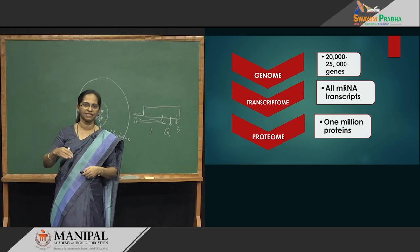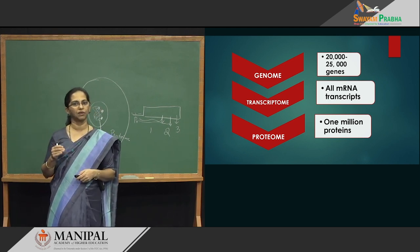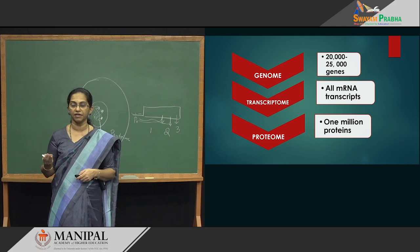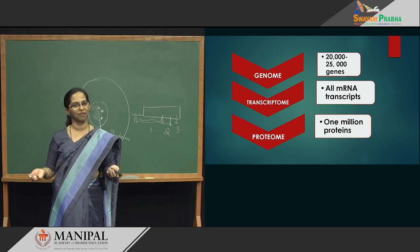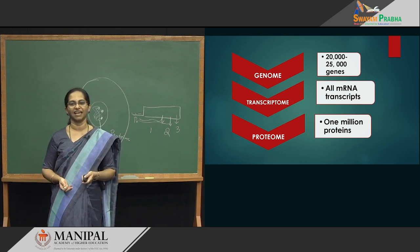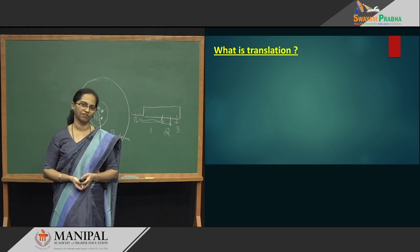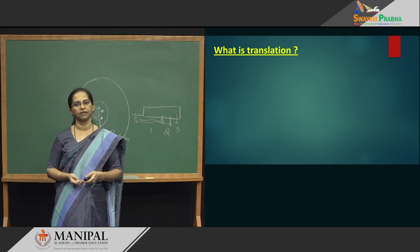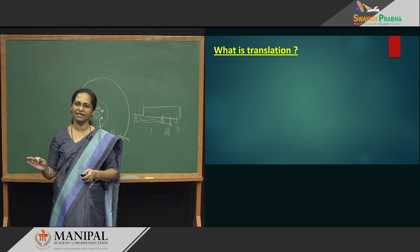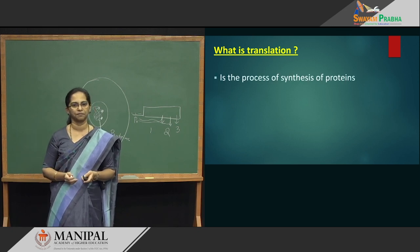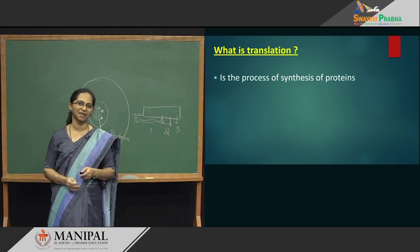Summarizing before we go to PTM: genome is 20 to 25,000 genes; transcriptome, the number went up further; and how many proteins — it has gone up further, magnification is about 1 million proteins. How did we magnify? That is through various procedures, and one such thing is post-translational modification. But before the topic of post-translation, we should be clear with what is translation. For a common man, translation is protein synthesis. It is the simple process of synthesizing proteins, and it takes place inside the ribosomes.